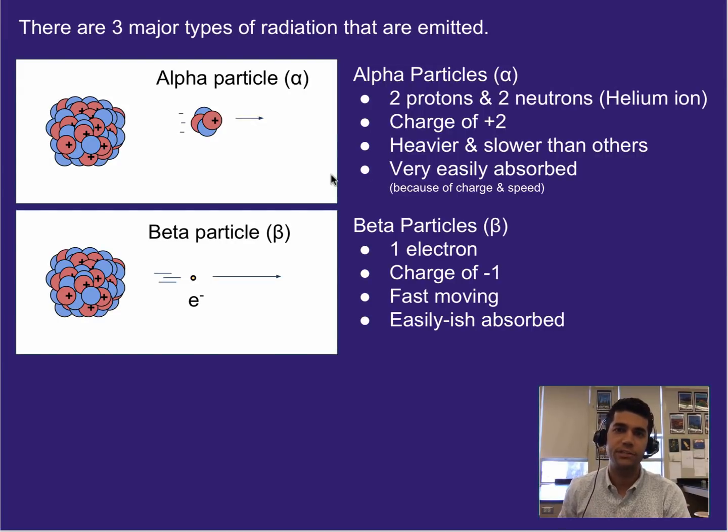The next type of radiation we're going to talk about is a beta particle. Now a beta particle is essentially an electron. So one of the neutrons here inside can eject an electron and turn into a proton in that process. So a beta particle is basically an electron. It has a charge of negative one. It is very fast moving compared to an alpha particle, and it's easily-ish absorbed because of its charge.